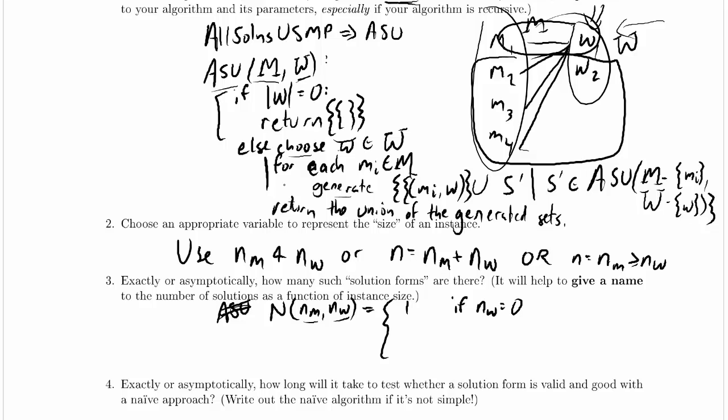Well, how many sub-solutions do we generate? For each of the sub-solutions, for each s prime, we only generate one solution. We make the solution a little larger because we tack on another pairing, but it's just one solution.